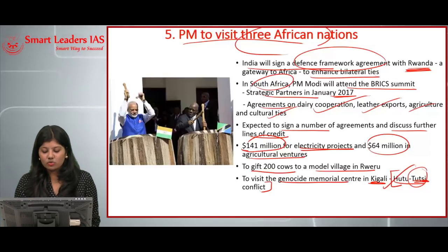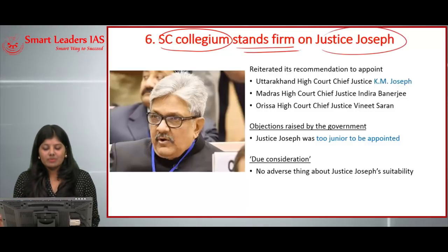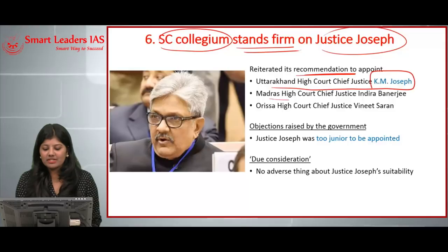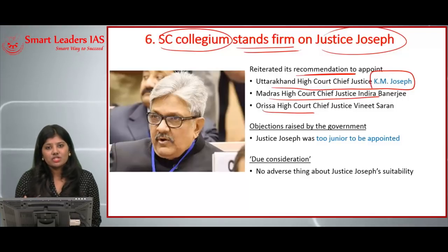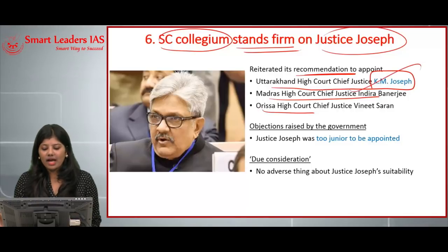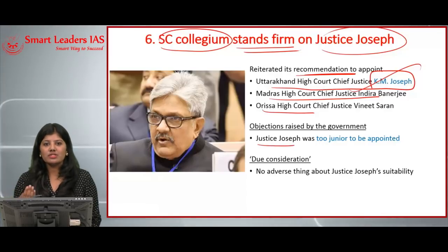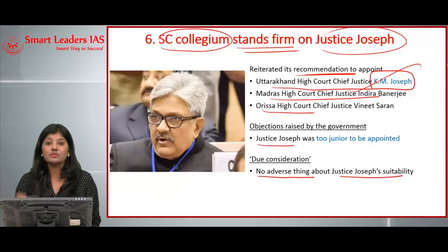The next article: the Supreme Court Collegium stands firm on Justice Joseph. The Collegium recently re-recommended appointing Uttarakhand High Court Chief Justice K.M. Joseph, Madras High Court Justice Indra Banerjee, and Orissa High Court Chief Justice Vineet Saran to the Supreme Court. Union Law Minister Ravi Shankar Prasad raised concern that Justice Joseph was too junior to be appointed. The Supreme Court Collegium replied that after duly considering the notice, they found no adverse issue regarding Justice Joseph's suitability and will stand firm in their decision.